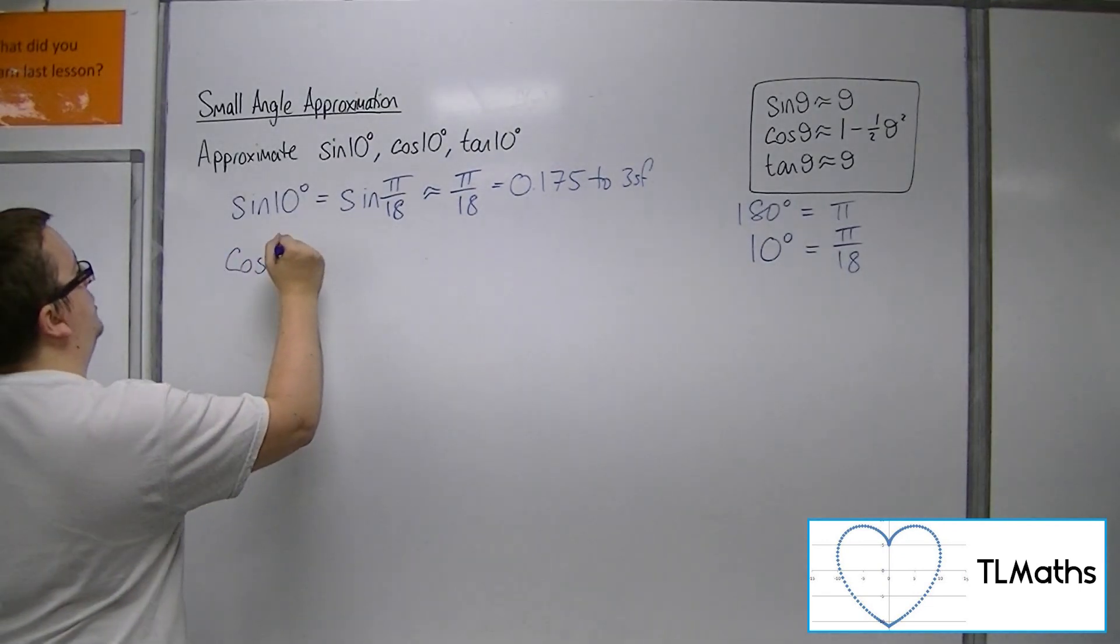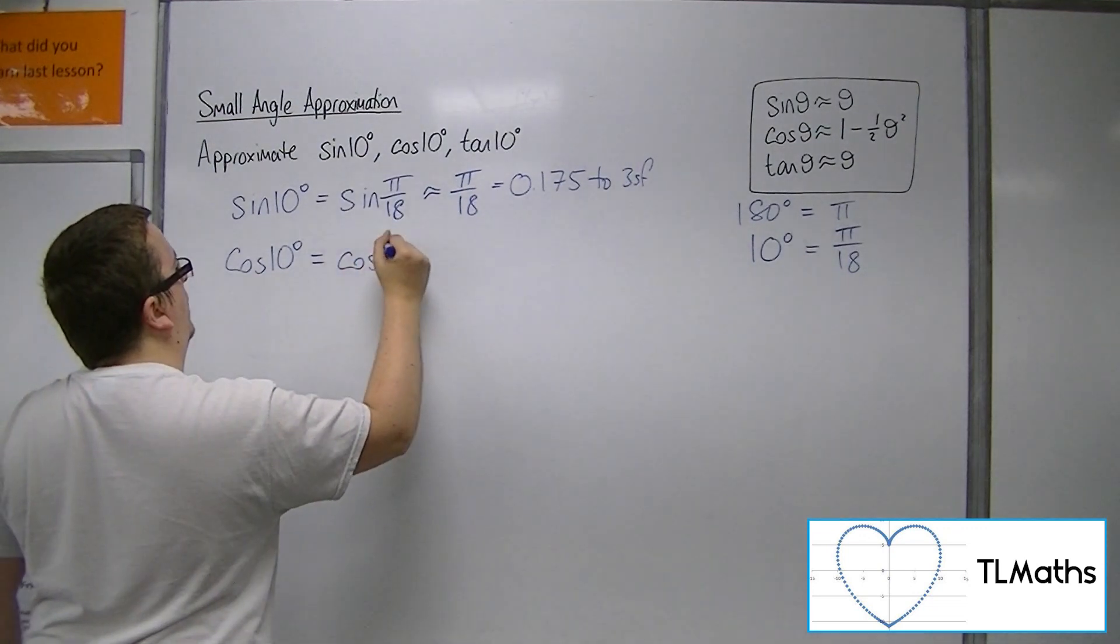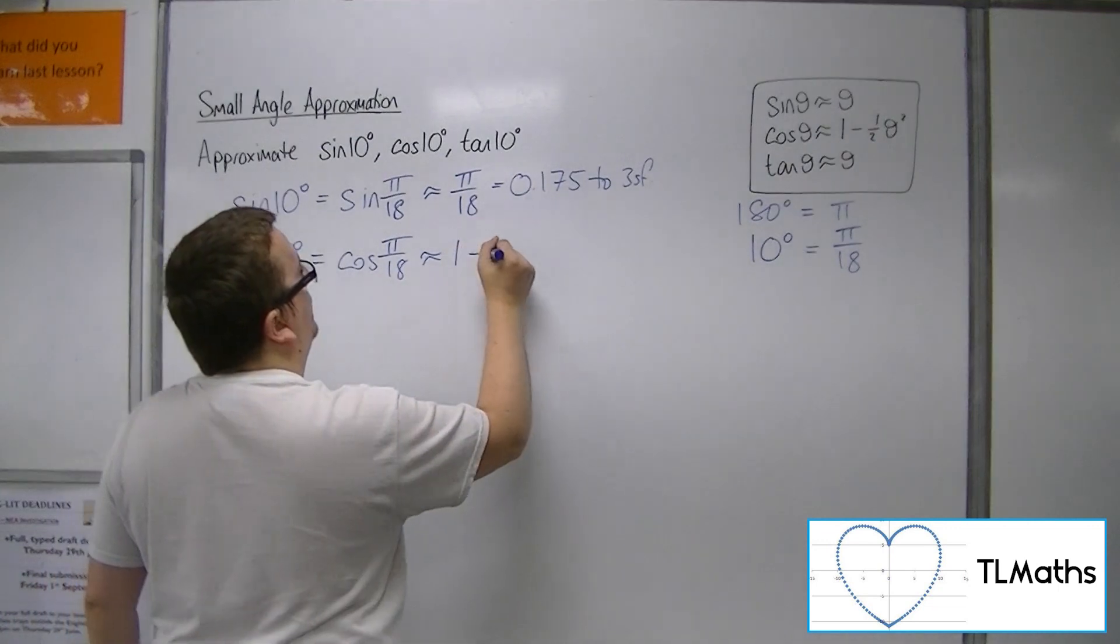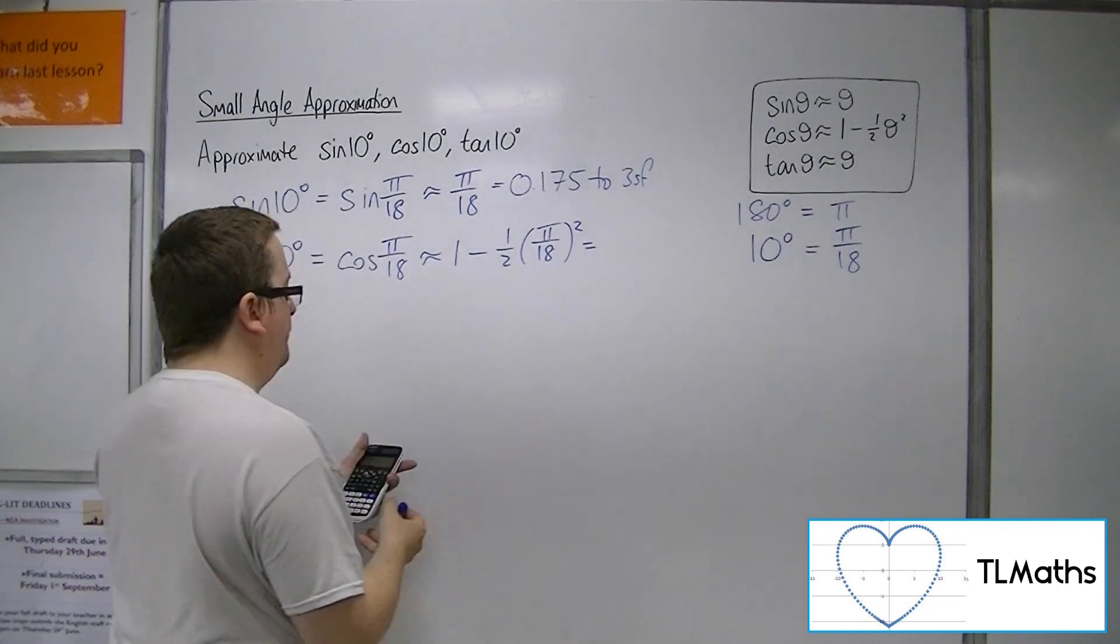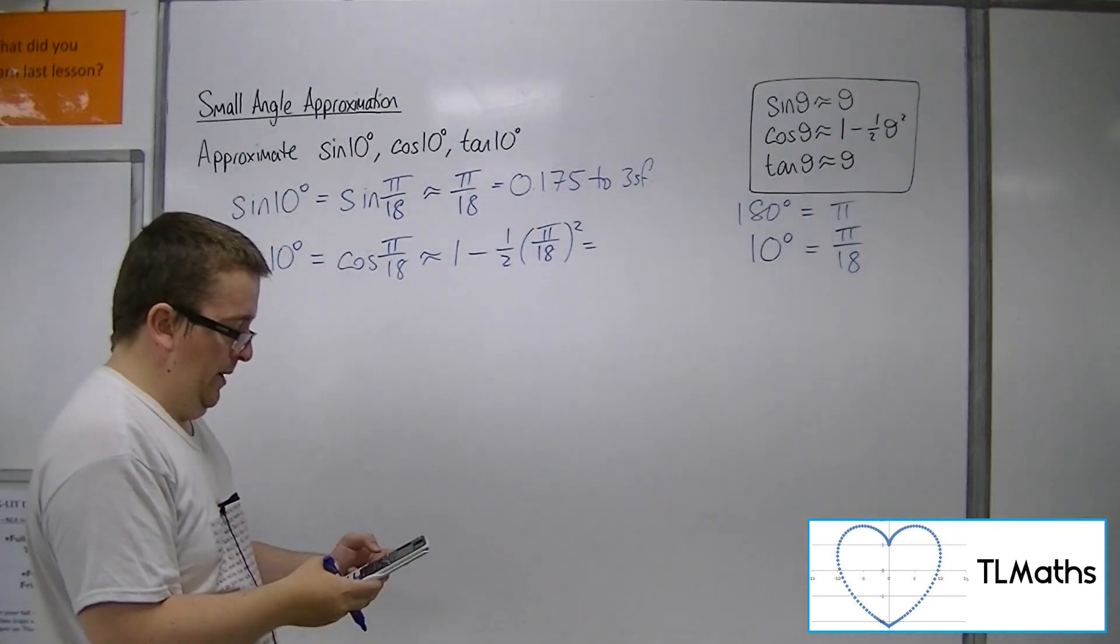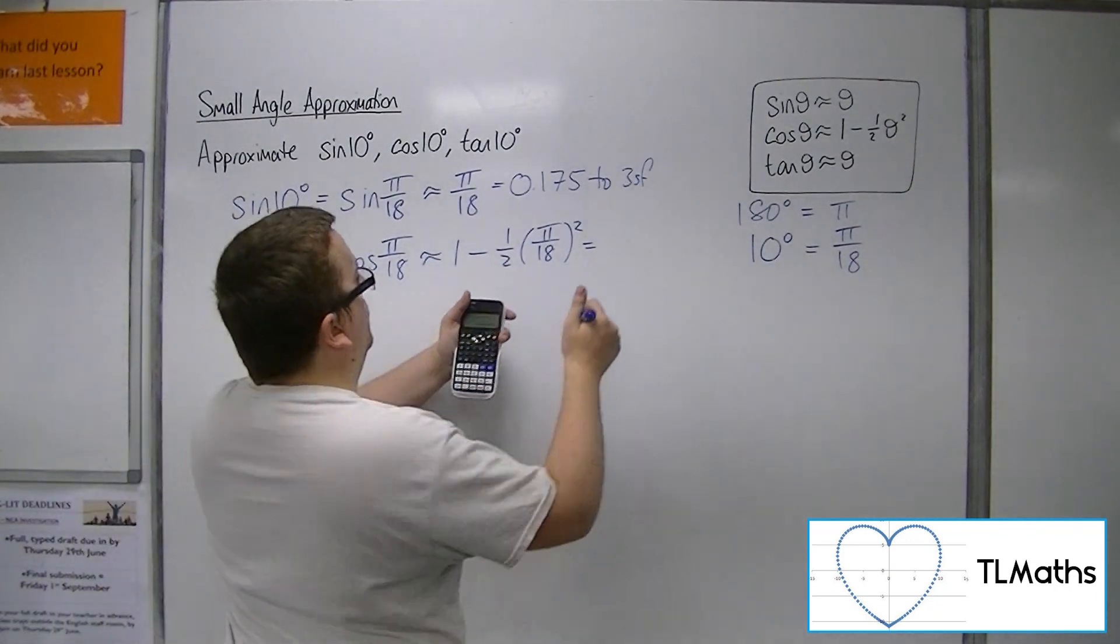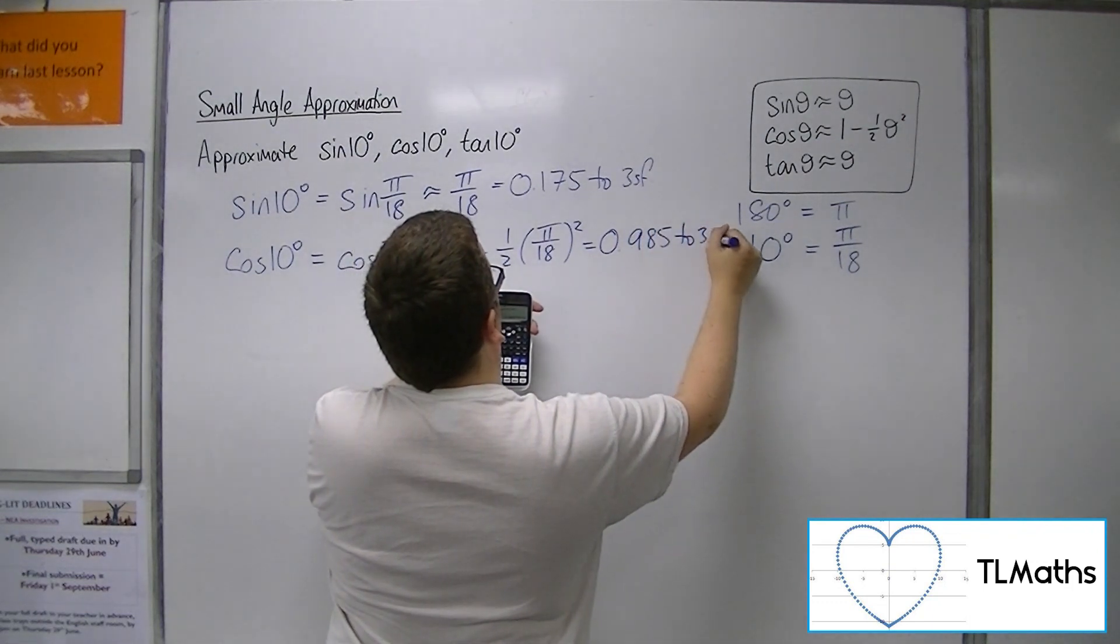So cos of 10 degrees is the same as cos of pi over 18 in radians, which is approximately 1 take away 1 half times pi over 18 squared. So 1 take away 1 half times pi over 18 squared, which is 0.985 to 3 sig fig.